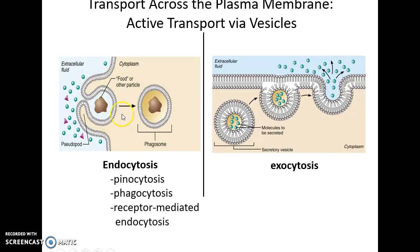Endocytosis is when a vesicle is formed around a substance and pulled into the cell, so the substance is now inside the vesicle. Endocytosis can be pinocytosis for fluids, phagocytosis for large solid objects, or receptor-mediated endocytosis, where receptors help attract only specific substances to be pulled in.